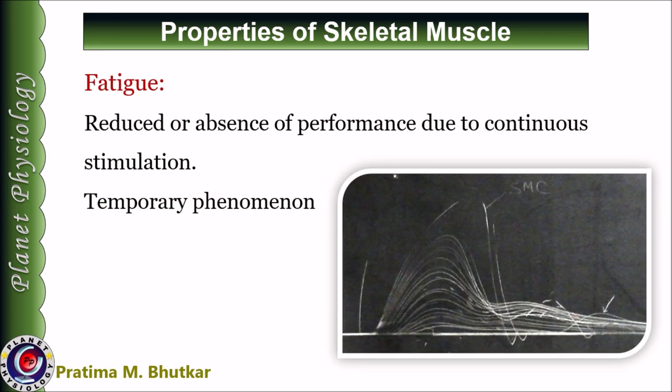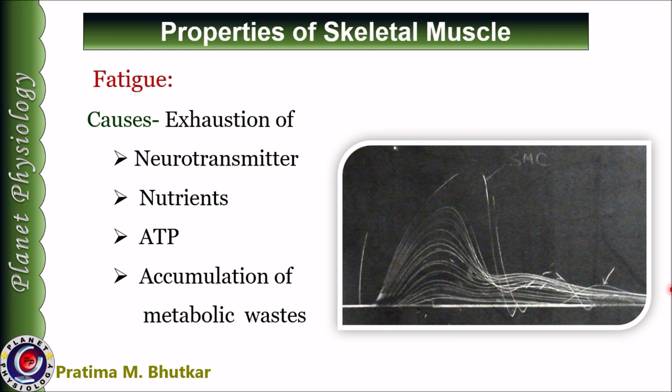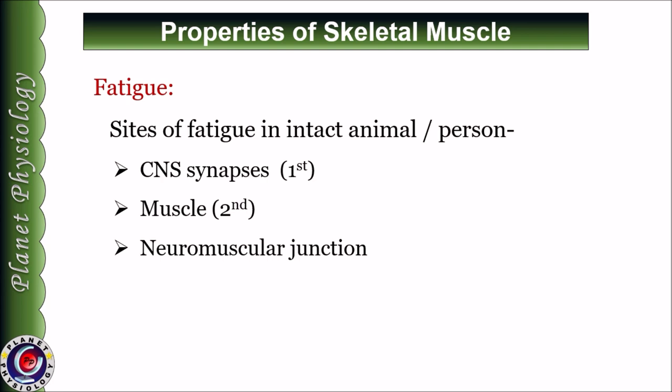The last property of skeletal muscle is fatigue. It is defined as reduced or absence of performance due to continuous repeated stimulation. It is a temporary phenomenon caused by exhaustion of neurotransmitters, nutrients, ATP, or accumulation of metabolic waste material in the muscle. In intact animals or human beings, the first site where fatigue sets in is synapses in the central nervous system. Motivation plays an important role to overcome this — a motivated person can continue work for longer. The second site is the muscle itself, with accumulation of metabolic waste products being an important cause. The last site is the neuromuscular junction.